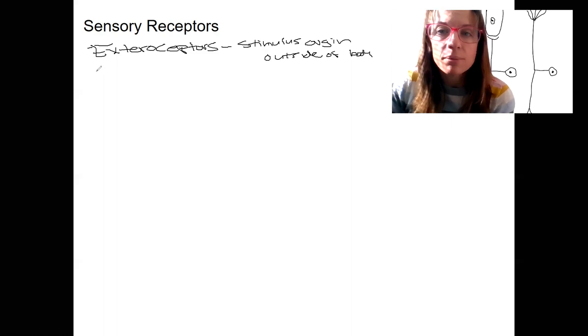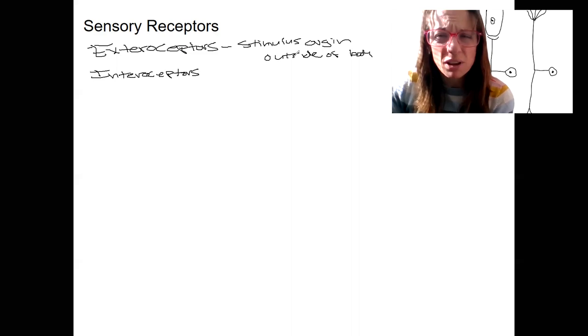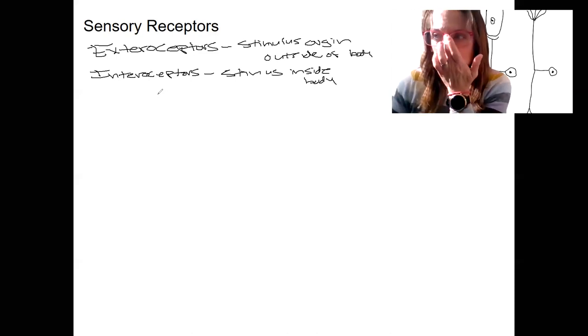The other type of receptors are interoceptors. So these are located inside the body. They're sometimes called visceroreceptors as well. It's your visceral signals. So the stimulus is inside the body. Some examples we've seen of this already, the muscle spindle, so that's a type of proprioceptor that tells you about body position. These interoceptors could also be in the internal organs telling you about the stretch of various smooth muscles, blood pressure, things like that.